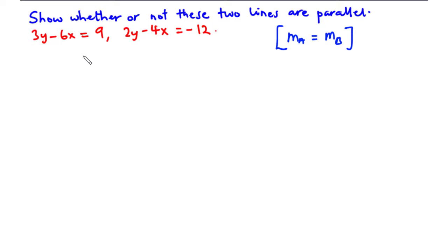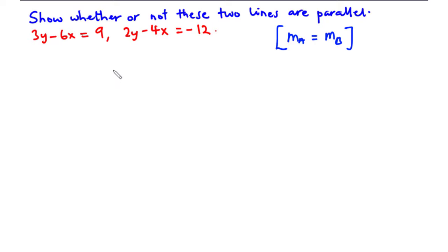Here we have two equations and the question reads: show whether or not these two lines are parallel. These two equations are represented in the general form — the general equation of a straight line. To show whether or not these two lines are parallel, we need to represent these equations in the slope-intercept form so that we can compare their gradients. If their gradients are the same, then we conclude the two lines are parallel; if they are not the same, then they are not parallel.